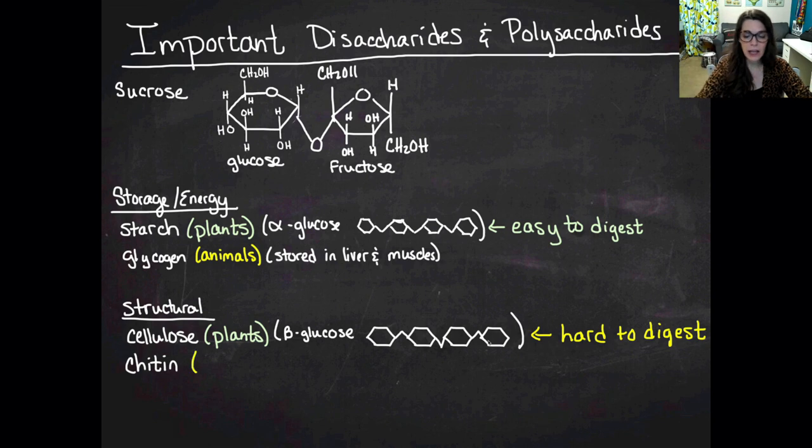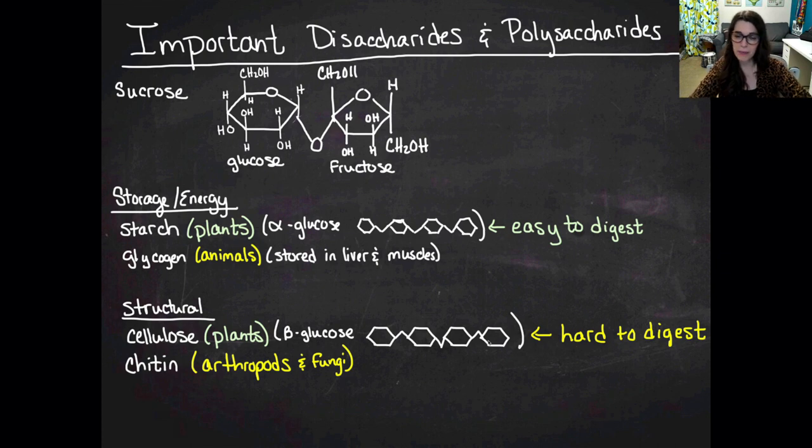The next one's chitin. Chitin is present in the cell walls of fungus, and it's also what makes up the exoskeleton of arthropods, like crabs, insects, stuff like that. That's interesting but not as relevant to us. You can actually break down chitin if you consume it because if you eat mushrooms, you can break them down.